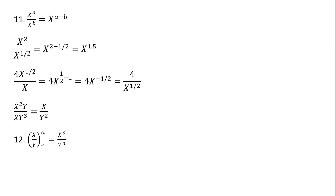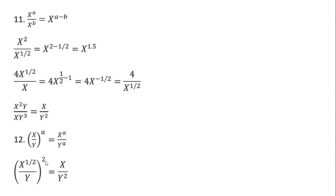Rule 12: multiply the exponents. For example, 2 times 1 half just leaves us with x. And then 2 times y raised to the power of 1 is just y squared.